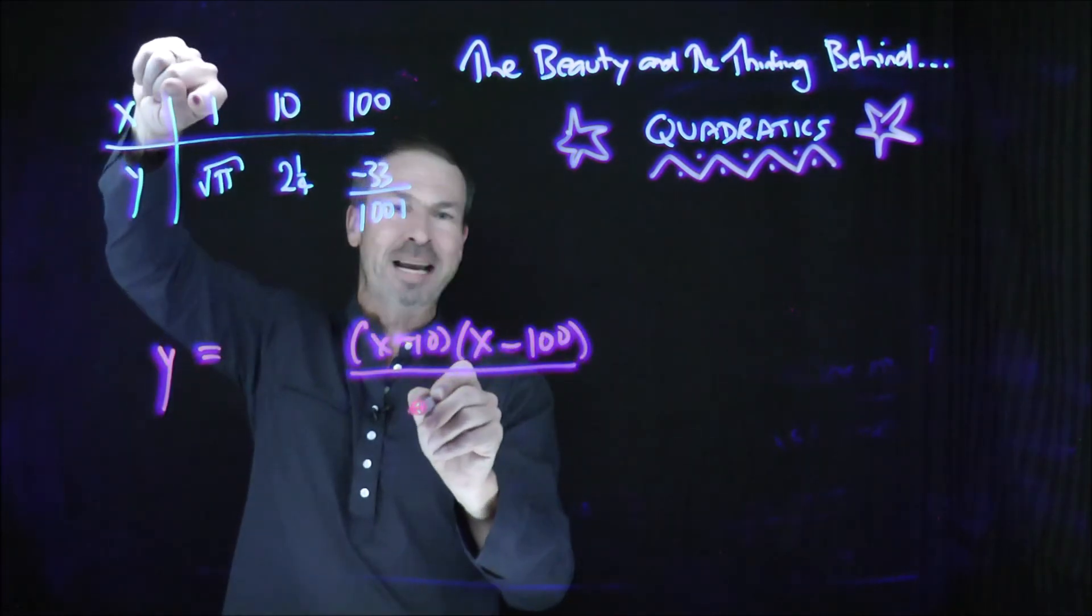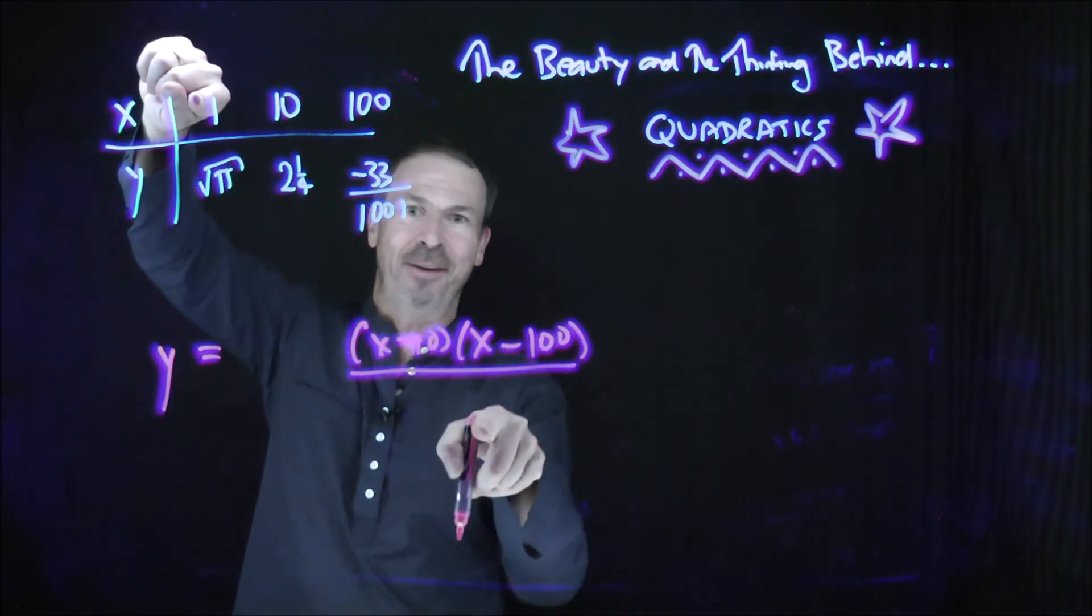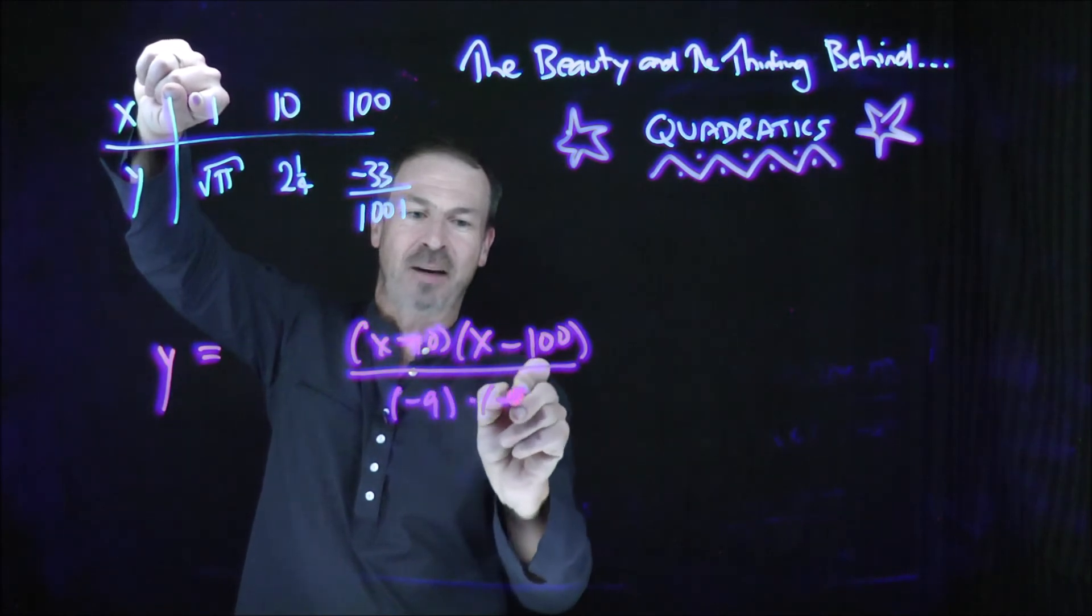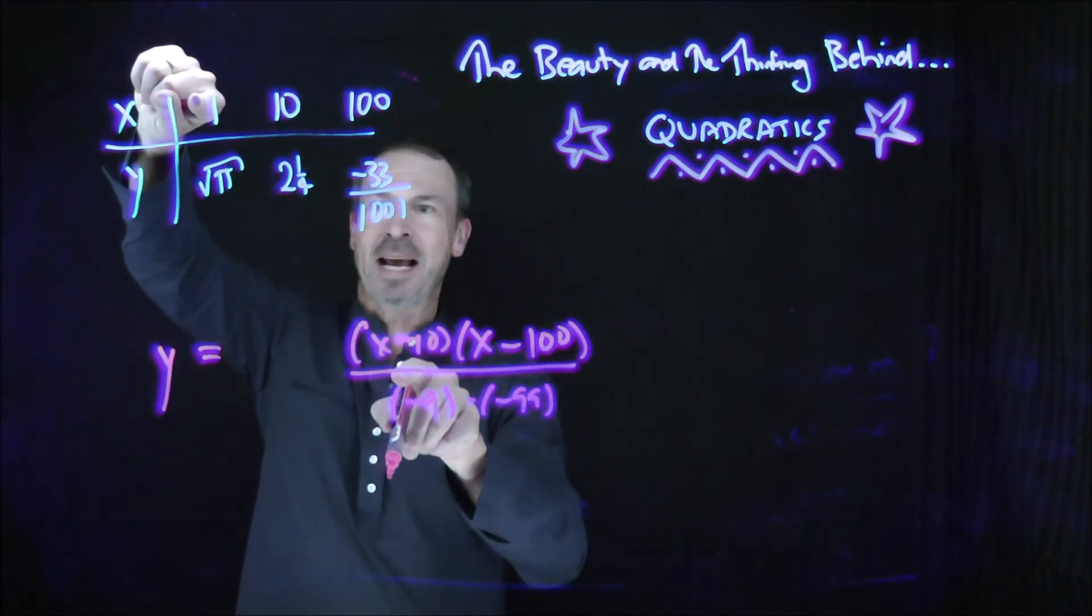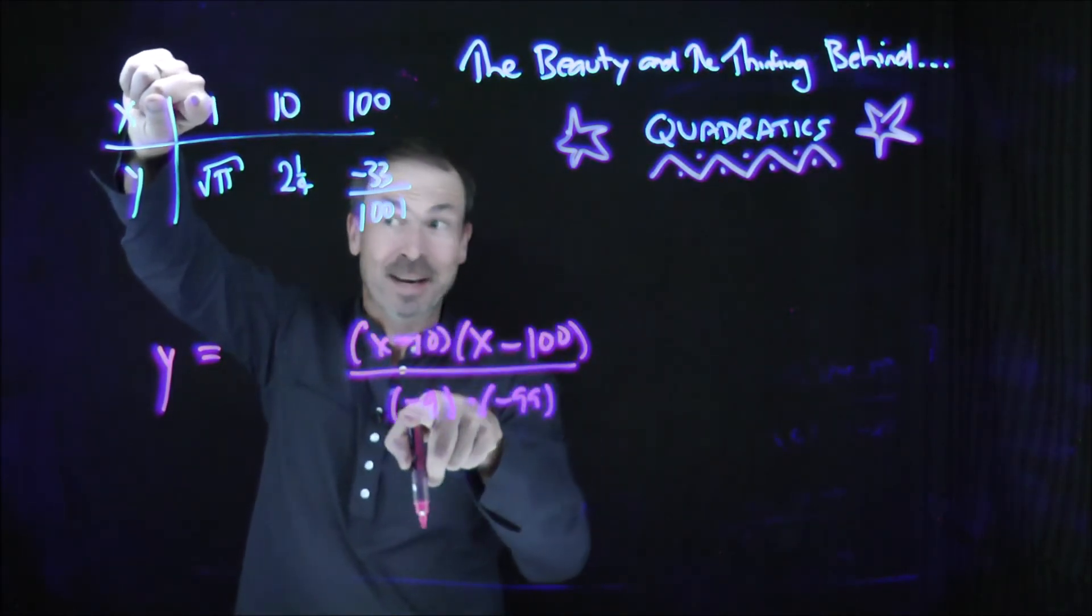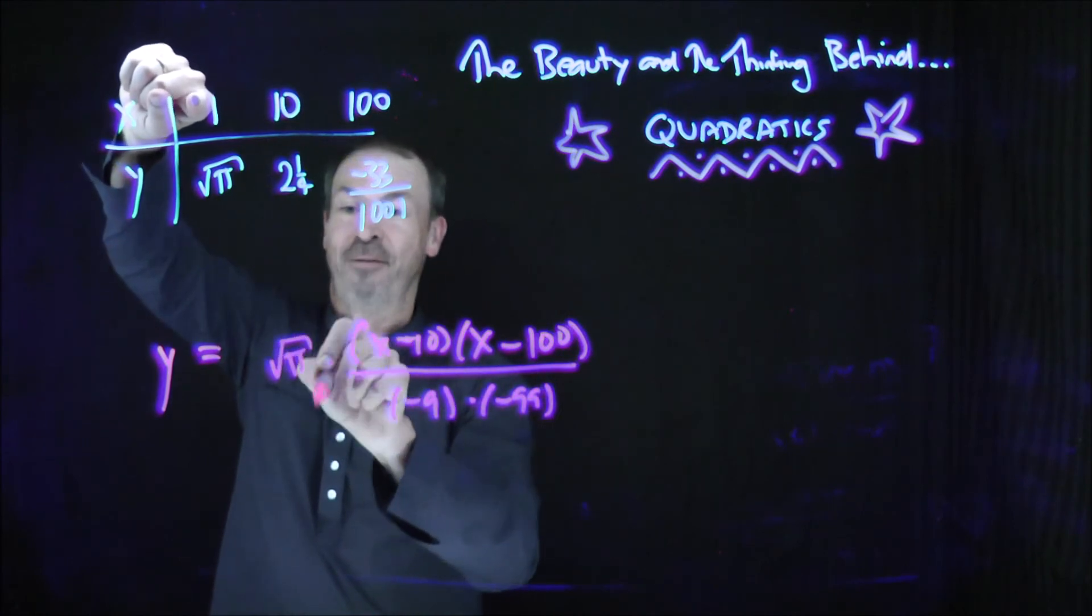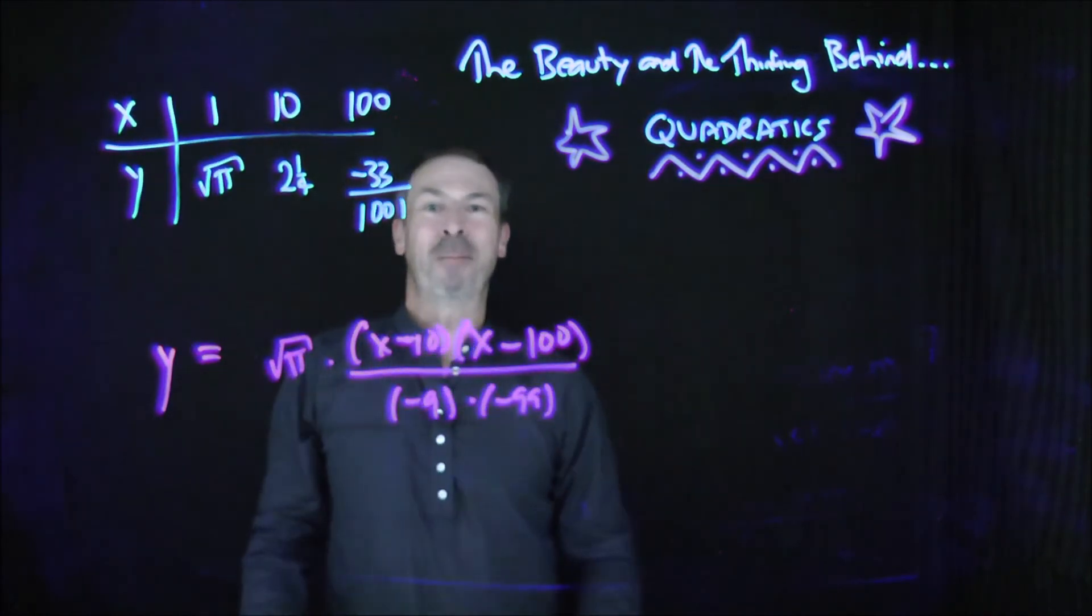When I actually put in x equals 1, I want the numerator and the denominator to match. So I want a negative 9 and a negative 99 here. So when x is 1, this will be 1, and I want the square root of pi out front. So the square root of pi times 1. Beautiful.